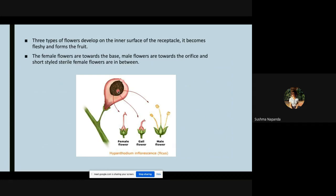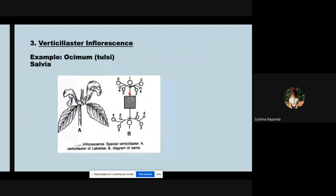Third, we have verticillaster inflorescence. An example is Ocimum or tulsi as we commonly call it, or Salvia. This is the verticillaster inflorescence as you can see. There are a bunch of flowers that arise from one point. When you see it under a microscope you can see that the stem is quadrangular in shape.